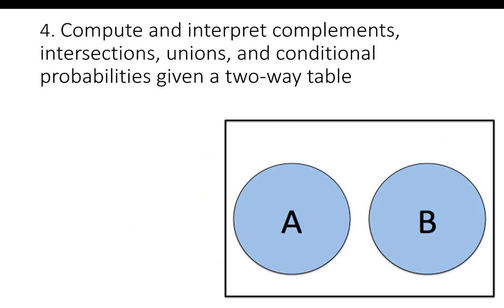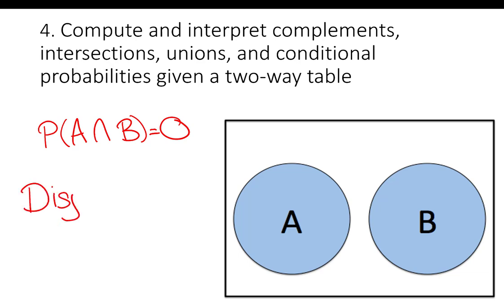There's also a formula for intersections: P(A and B) equals P(A) times P(B given A), where P(B given A) is a conditional probability. If P(A and B) equals 0 — meaning no overlap — the events are said to be disjoint, meaning they never occur together.